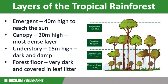Underneath the main canopy you have the under canopy. This is a lower level of trees that grow to around 15 metres in height. Due to the canopy above, this layer only receives around 10% of the sunlight in the rainforest. This part of the rainforest is very damp so species of frog and snakes thrive here.